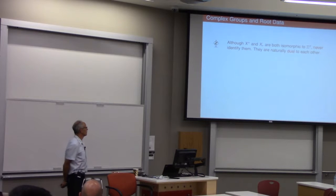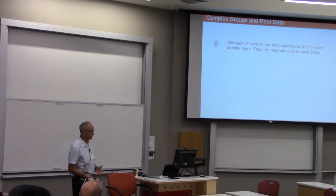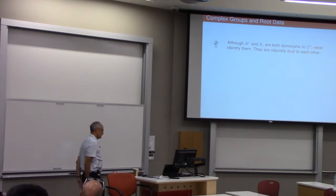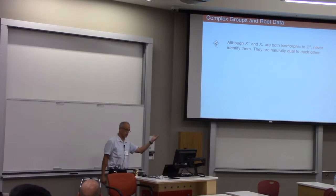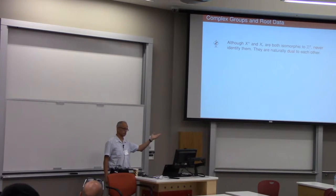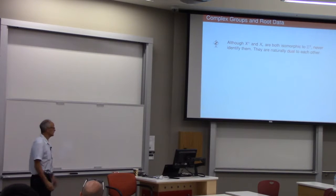And so here's my first dangerous bend. X upper star and X lower star are both Z^n, but you should never identify them. And this was a mistake I made for about 20 years in the subject, using the bilinear form and confusing roots and co-roots, and it held me back. Roots live in X upper star, co-roots live in X lower star, and they're just different places. Don't ever identify a co-root with some multiple of a root. And these two spaces are naturally dual to each other. Okay?